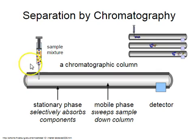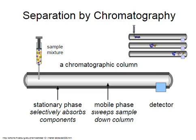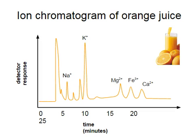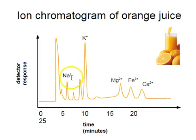In gas chromatography, we put the mixture in and run electrical current through it, separating the materials as a gas travels through the chromatographic column. There is a stationary phase, which absorbs some of the components, and a mobile phase, which sweeps down the column. A detector, typically hooked up to a computer screen, gives you a reading of what was found. For example, if we put orange juice in a gas chromatograph, we would find certain peaks based upon the ions present, with each peak representing a specific ion or compound.